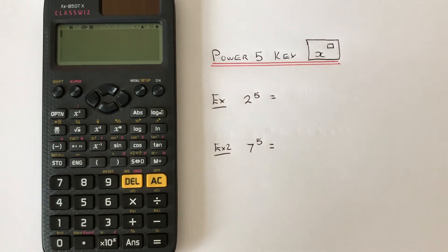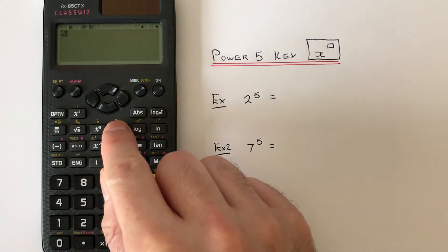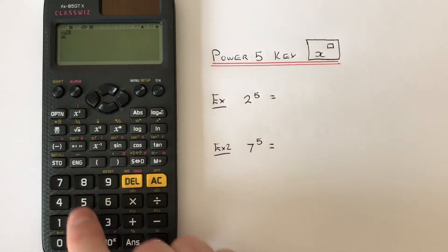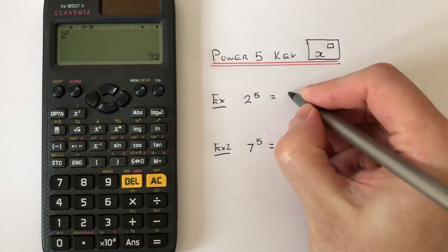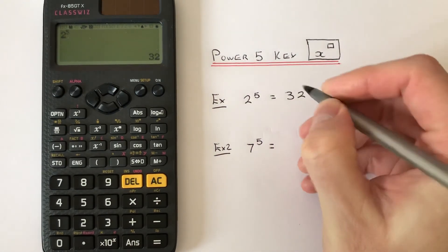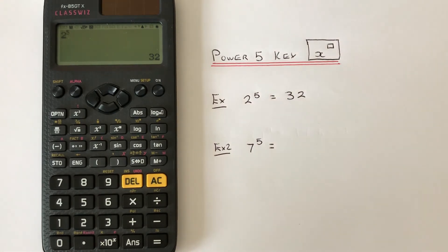So let's have a look at example one. I've got to do 2 to the power of 5. So we press 2, then the power key, then 5, press equals, and we get the answer 32.